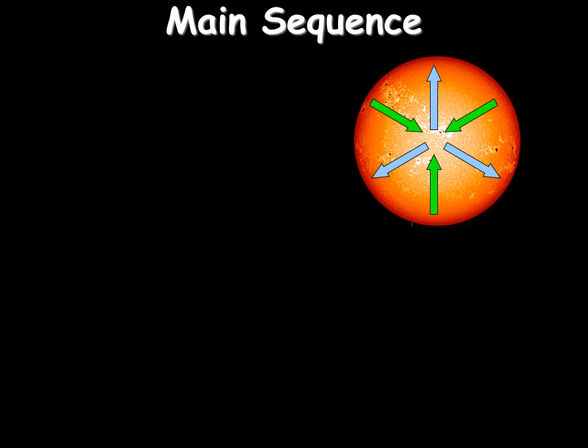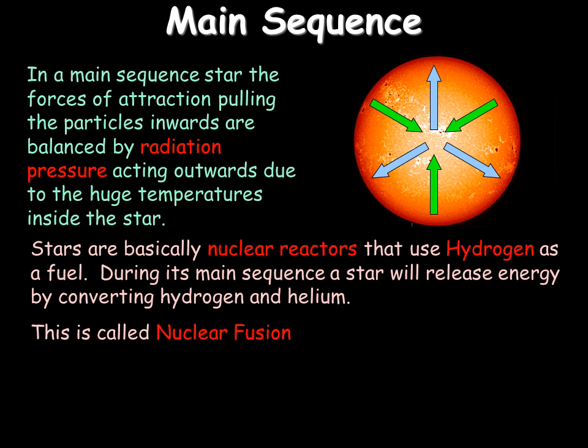In the main sequence, which is what our Sun is doing now, there are two forces. The gravitational force, as mentioned, which is pulling it inwards and together, and there's a radiation pressure which is acting outwards. These will balance up so the forces are equal, and when they're equal the Sun or the star is stable.